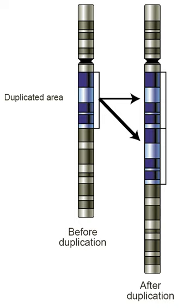Duplications arise from an event termed unequal crossing over that occurs during meiosis between misaligned homologous chromosomes. The chance of this happening is a function of the degree of sharing of repetitive elements between two chromosomes. The products of this recombination are a duplication at the site of the exchange and a reciprocal deletion. Ectopic recombination is typically mediated by sequence similarity at the duplicate breakpoints, which form direct repeats. Repetitive genetic elements such as transposable elements offer one source of repetitive DNA that can facilitate recombination, and they are often found at duplication breakpoints in plants and mammals.